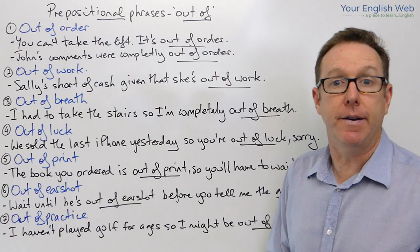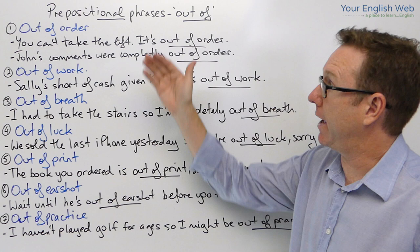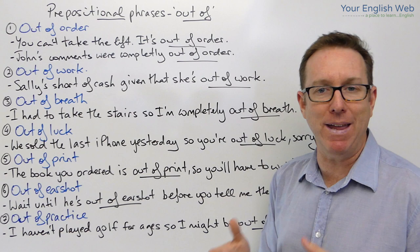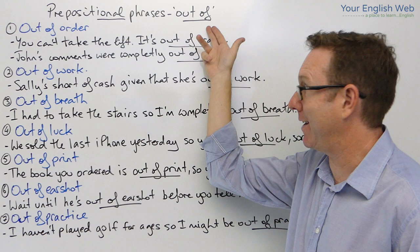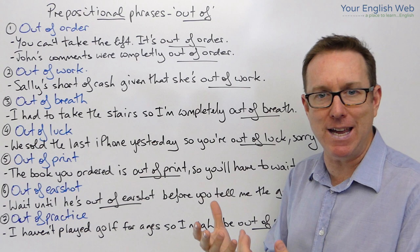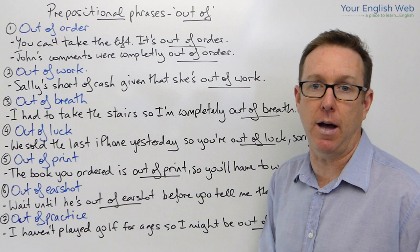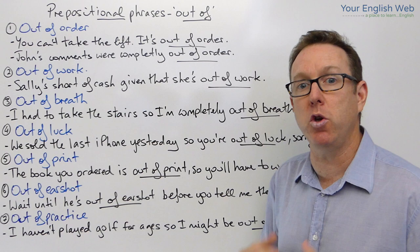Now in today's lesson, as I said, we're looking at prepositional phrases and in particular ones that take this structure here — 'out of' — and there are many prepositional phrases that we can use with 'out' and 'of'. Some of these will be familiar to you because you would have seen them if you've ever been to the UK, Australia, USA, Canada, etc. You've probably heard them in speech and seen them written, but not many people use them, which is a problem, except for the more common ones.